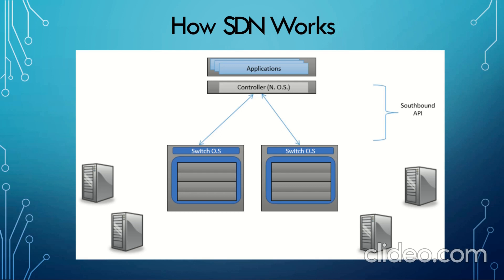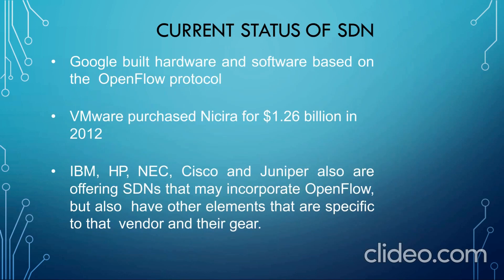The switch is connected to the controller, and the main use of the controller is to do all the software-defined networking. The application layer consists of all the business applications in our devices. Regarding the current status of SDN: Google built hardware and software based on the OpenFlow protocol. VMware purchased Nicira for $1.26 billion in 2012 — Nicira was a company which provided SDN services to various businesses and enterprises. Companies such as IBM, HP, Cisco, NEC and Juniper are also using SDN, incorporating the OpenFlow protocol while also having other vendor-specific elements.